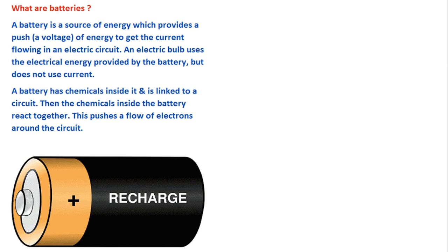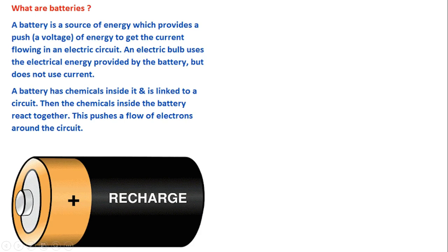The chemicals inside the battery react together and push a flow of electrons around the circuit. Batteries and cells are used in remote controls, flashlights, torches, clocks, radios, and calculators. Some large batteries are used in automobiles. Battery-operated machines are much safer to use than those operated by mains electricity, but you still need to be careful, because batteries contain chemicals that could hurt you. So you should follow safety rules while using batteries.